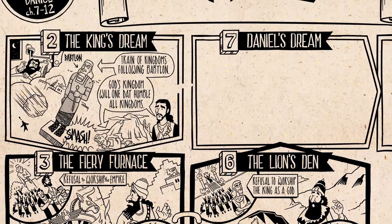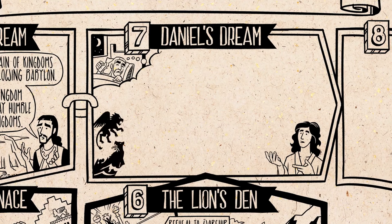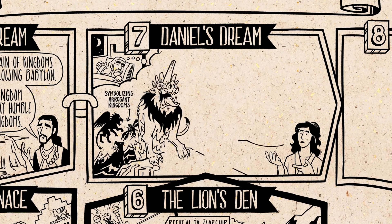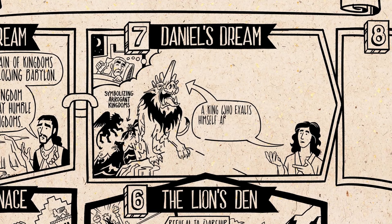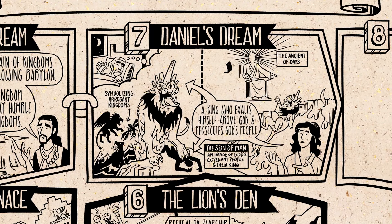Which brings us to chapter 7 — the pair of chapter 2 and the center of the book where all its themes come together. It's another dream, but this time it's Daniel's, and ironically he can't understand it until an angelic messenger explains it to him. He sees a series of four beasts: one like a lion, then like a bear, then one like a winged leopard, each symbolizing an arrogant kingdom. Last of all is a super beast — a really evil empire — with lots of horns, a common symbol for kings in the Old Testament. There's one specific horn who is an image of an arrogant king who exalts himself above God and persecutes God's people. They are symbolized by a figure called the Son of Man, an image for both God's covenant people and their king from the line of David. But then, all of a sudden, God — called the Ancient of Days — comes and sets up his throne. He destroys the super beast and exalts the Son of Man on the clouds, where he comes up to sit at God's right hand and share in God's rule over the nations.